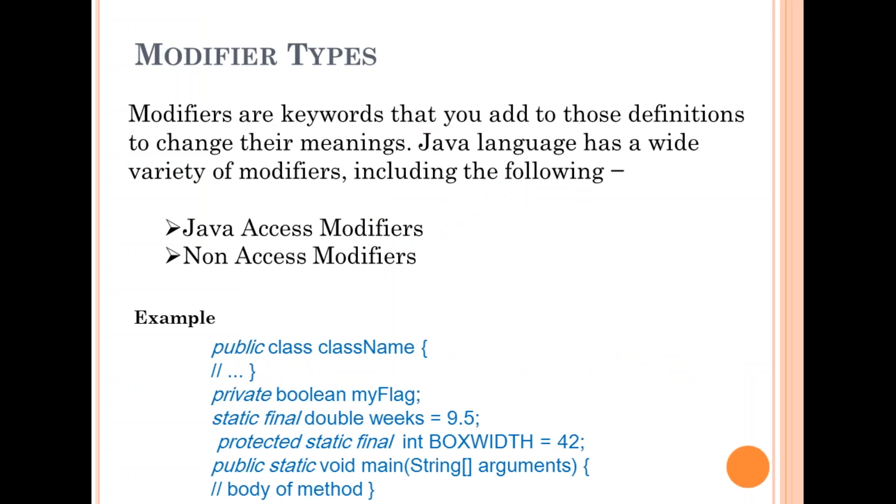Modifier types. Modifiers are keywords that you add to those definitions to change their meanings. Java language has a wide variety of modifiers including the following: Java access modifiers and non-access modifiers. To use a modifier you include its keyword in the definition of a class, method, or variable. The modifier precedes the rest of the statement as in the following example.